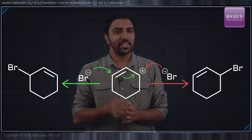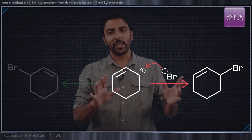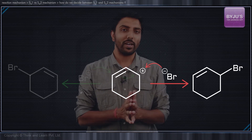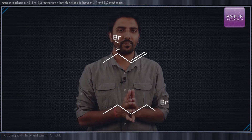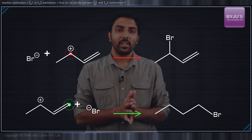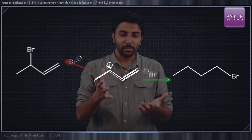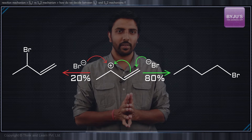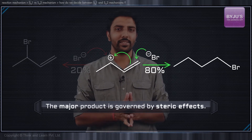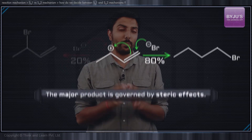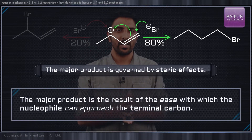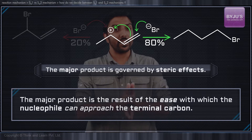In this case, there is just one product, although there seem to be two competing sites for the nucleophile to attack. Had we taken an unsymmetrical allylic substrate, we would likely get two different products because there are two unequal competing sites for the nucleophile to attack. Although this mechanism is SN1, the major product is governed by steric effects — that is, by the ease with which the nucleophile can approach the terminal carbon.